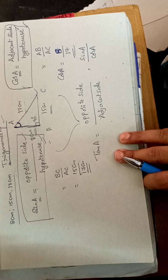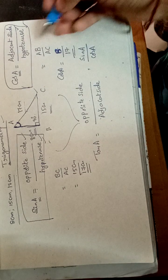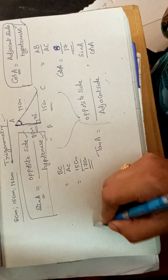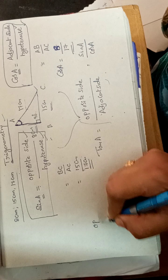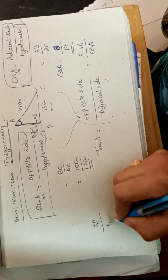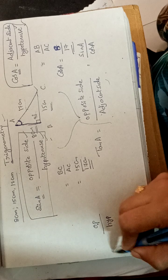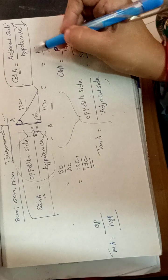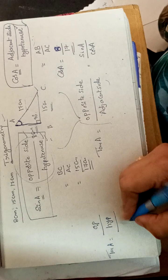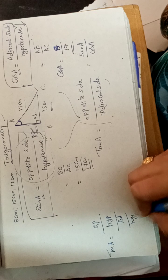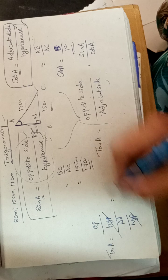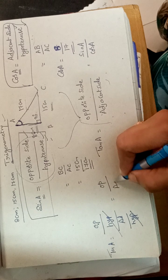Using these formulas, we can verify tan A equals sin A divided by cos A. Take sin A as opposite side over hypotenuse, and cos A as adjacent side over hypotenuse. When we divide, the hypotenuse cancels out, and the remaining result is opposite side by adjacent side. This confirms that tan A equals opposite side by adjacent side.